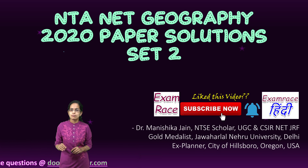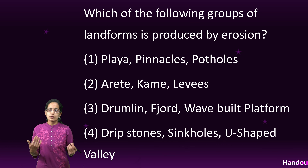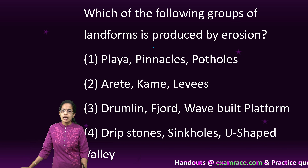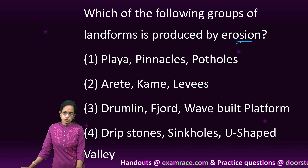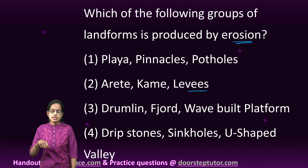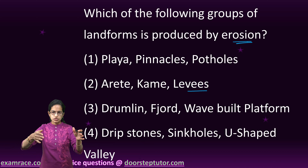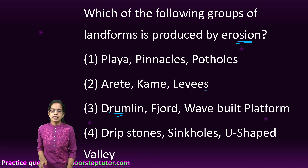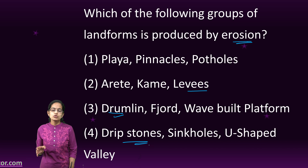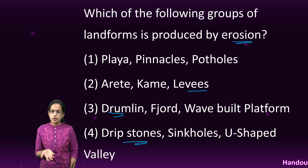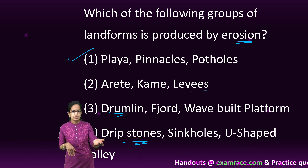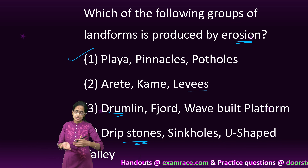Let's begin solving the NTN8 paper for Geography 2020. Which of the following explains that the landforms are produced by erosion? We'll first pick up the depositional ones. Levees are depositional landforms — deposits on the side of the river. Similarly, drumlins are depositional, and drip stones are depositional karst valley features. So the only erosional option left is option one. We can identify depositional forms and pick out the erosional ones by elimination.